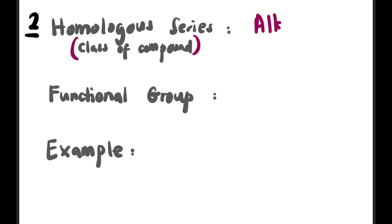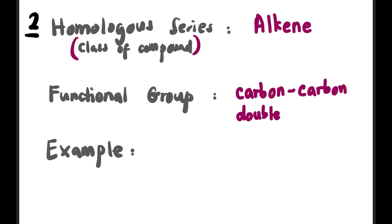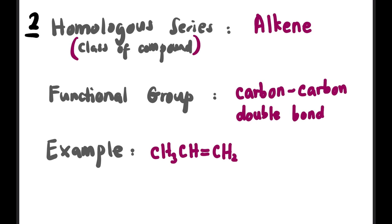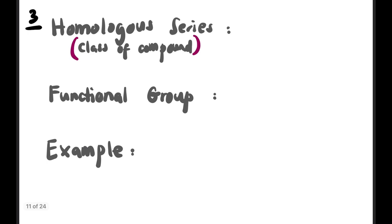The second homolog series is alkene. Its functional group is the carbon-carbon double bond (C=C). An example structure shows CH₃CH=CH₂. When asked to identify the functional group, circle and label the C=C double bond — that is the functional group of alkene.